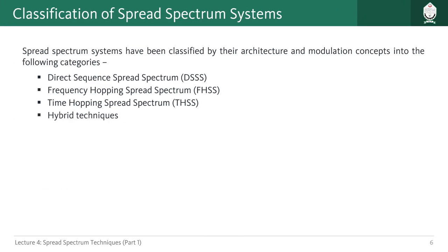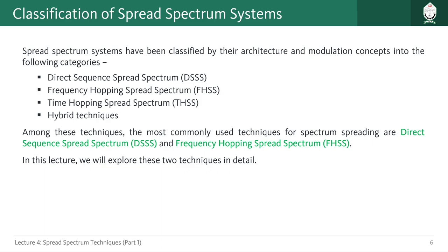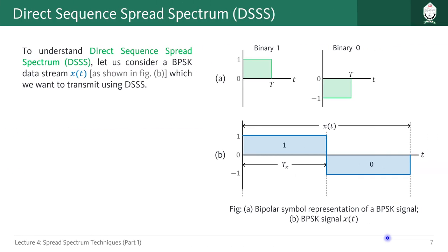Spread spectrum systems are classified into four types: Direct Sequence Spread Spectrum (DSSS), Frequency Hopping Spread Spectrum (FHSS), Time Hopping Spread Spectrum (THSS), and hybrid techniques. DSSS and FHSS are the most popular and commonly used. In this lecture we are going to discuss the working principles of these two techniques in detail.